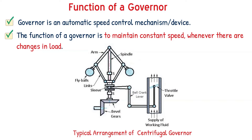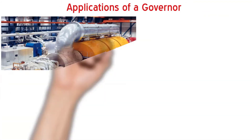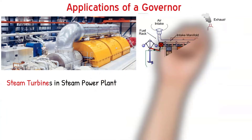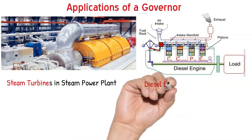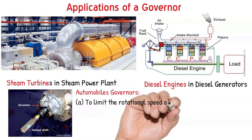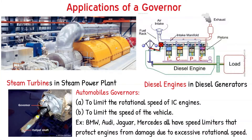The diagram shows a typical arrangement of a mechanical centrifugal governor. Governors are employed in various applications for various purposes. In automobiles, governors are used for two purposes: one is to limit the rotational speed of the IC engine, and another is to limit the speed of the vehicle. In fact, all recent cars — BMW, Audi, Mercedes — all have speed limiters that protect engines from damage due to excessive rotational speed.